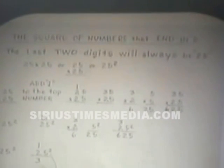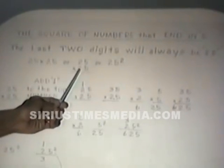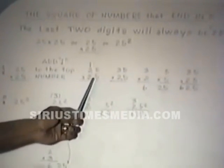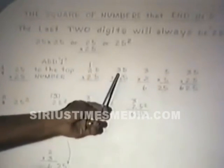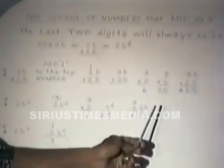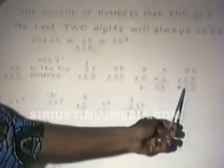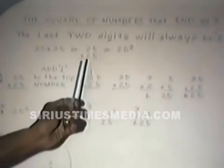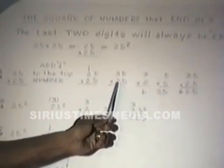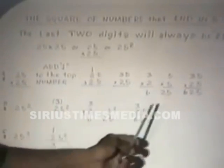To square any number ending in 5, take 25 times 25. You add 1 to the tens digit: the 2 becomes a 3. Then you multiply 2 times 3, which gives 6, and 5 times 5 gives 25. So 25 times 25 equals 625.